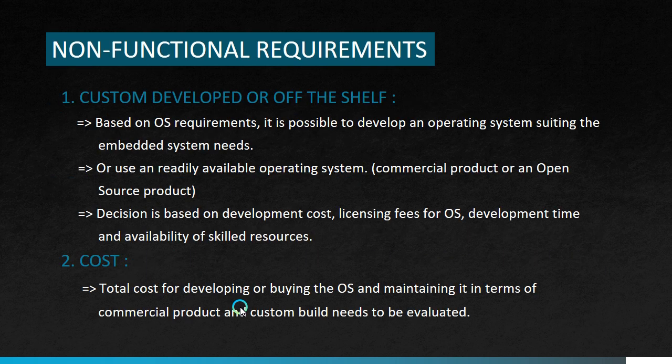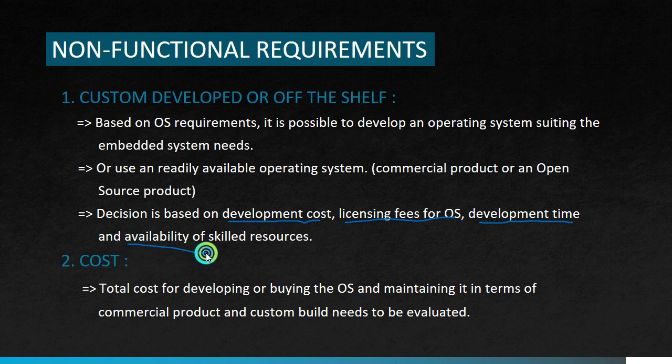Next we move on to non-functional requirements. The first one is custom developed or off-the-shelf. Depending on the OS requirement, it is possible to go for complete development of an operating system suiting the embedded system needs, or we can use a readily available off-the-shelf operating system — either a commercial product or an open source product. This decision is based on development cost, licensing fees for the OS, development time, volume, and availability of skilled resources.